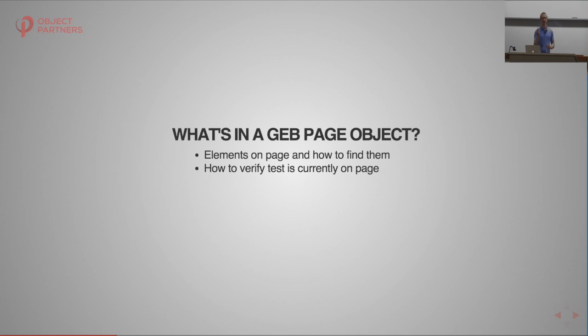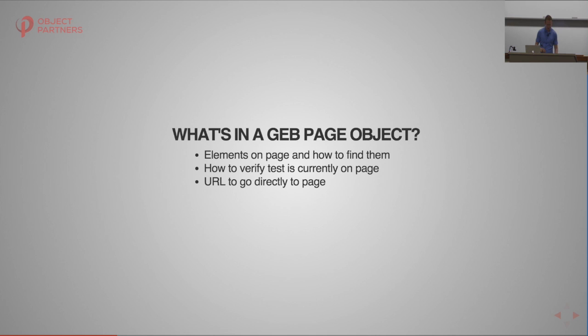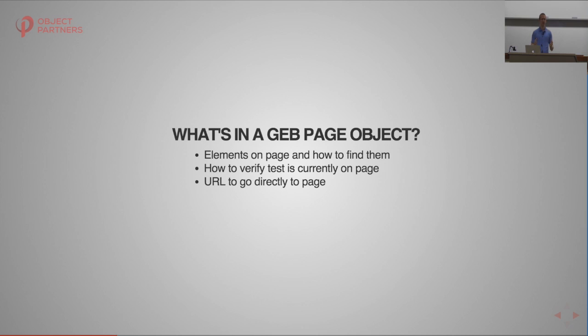You can also optionally include an 'at' checker so Geb verifies you're on the correct page. This makes debugging failures much easier: without it, you'll get a message like 'this element isn't present,' whereas with it, Geb tells you 'you're on the wrong page.' You can define the URL either as an absolute URL or a path relative to your application. Going straight to a page can speed up tests — for example, rather than navigating through a login page and five deep into a flow for every test, you can log in and jump directly to the page.